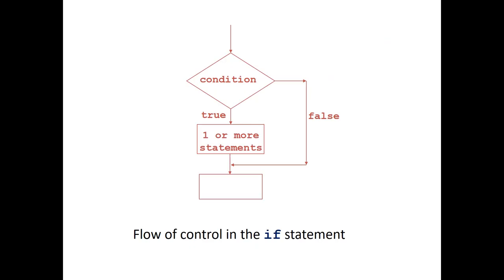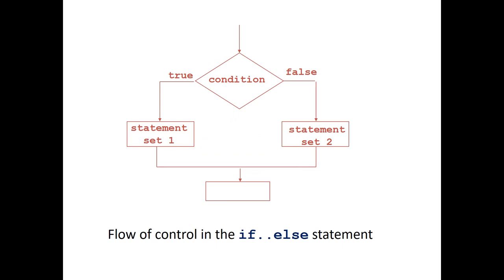This diagram summarizes the flow of control in the if statement. The program flow checks a condition — if true, it executes one or more statements, then goes to the next line; if false, it skips the statements and goes directly to the next line. Similarly, the flow diagram for if-else: check the condition — if true, carry out one statement set; if false, carry out the other statement set. Then exit the control structure and proceed to the next line.